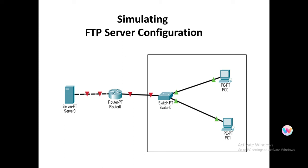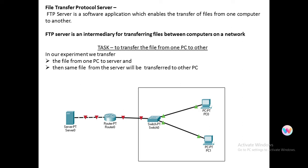Hello everyone. Welcome to this practical demonstration of configuring an FTP server. Today we are going to configure an FTP server using Cisco Packet Tracer. FTP is a protocol used to transfer files from one machine to another. In this experiment we are going to take two computers — create a file on one machine, upload it to the FTP server, and then transfer it to the other machine.